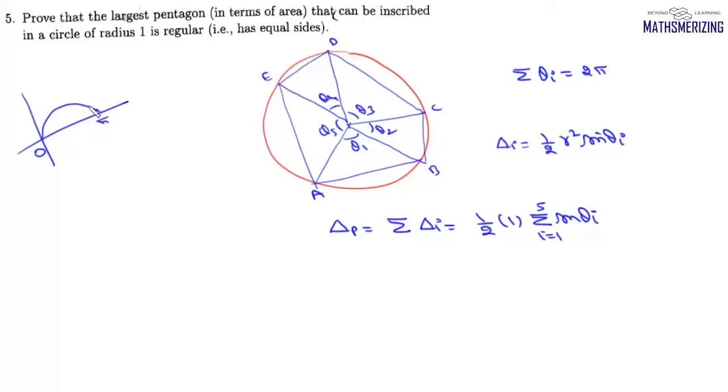Now sine is a concave down function in this interval, then we can say that the summation sine theta i upon five must be less than equal to sine summation theta i upon five. So we can write sine summation theta i upon five and it will be less than equal to sine. Now what is summation theta? Summation theta is two pi so it'll be two pi by five.